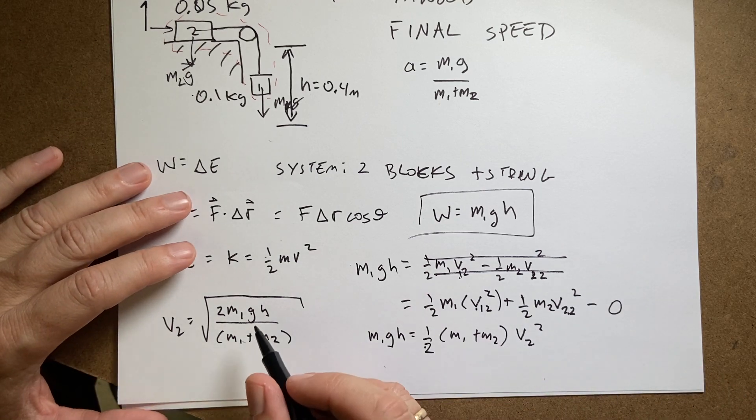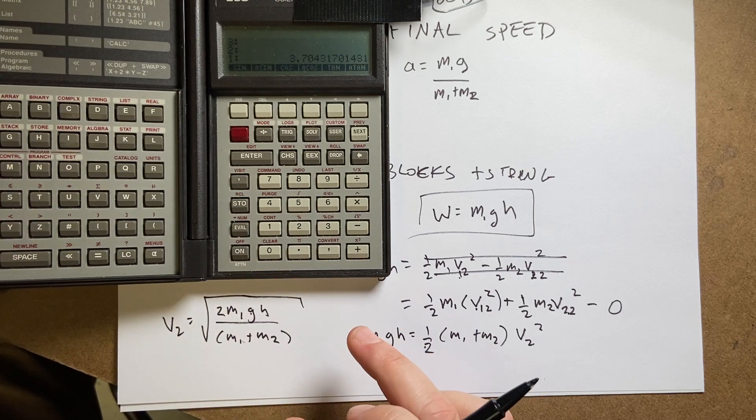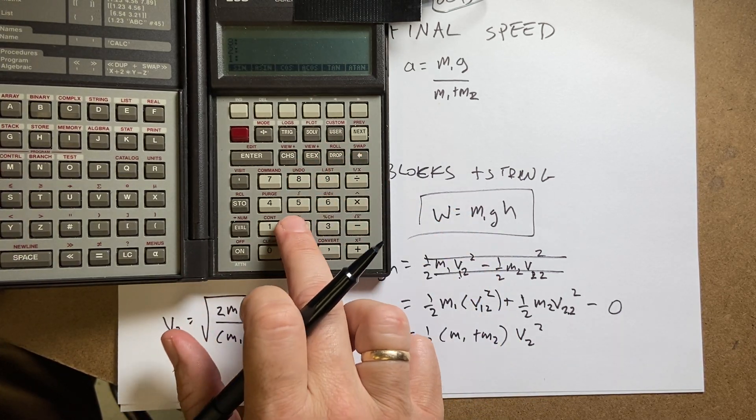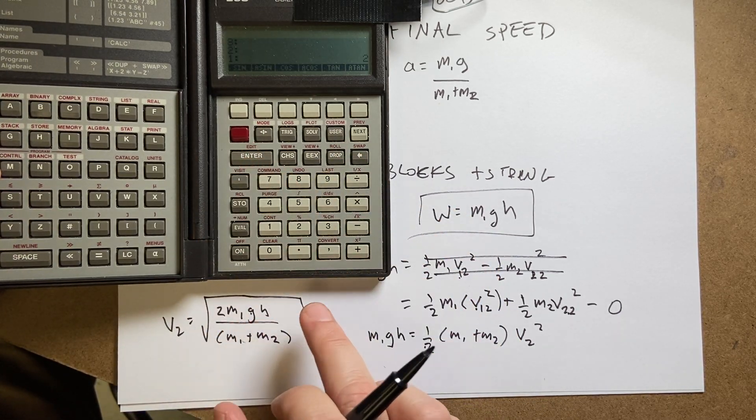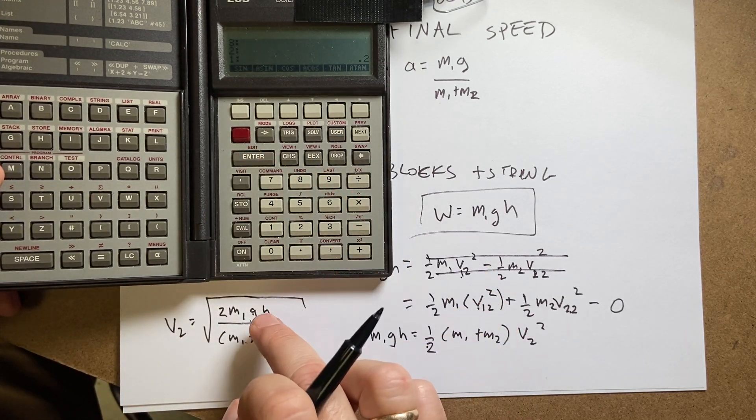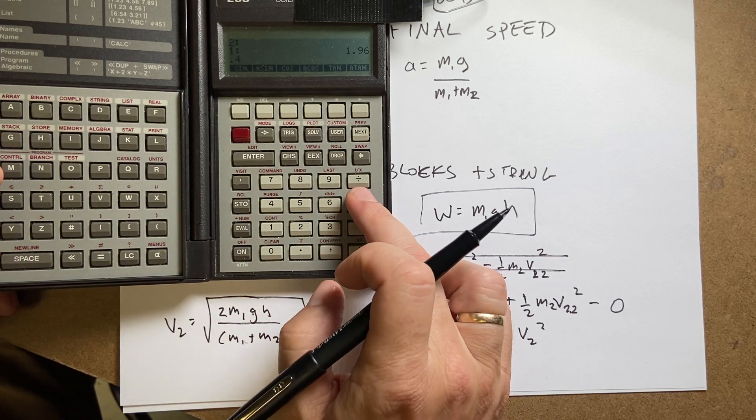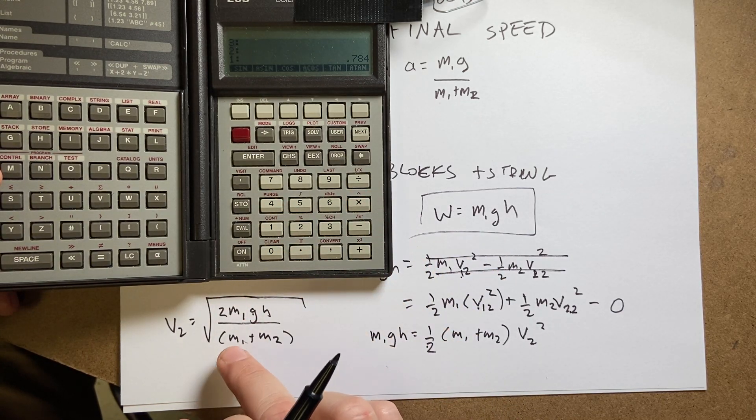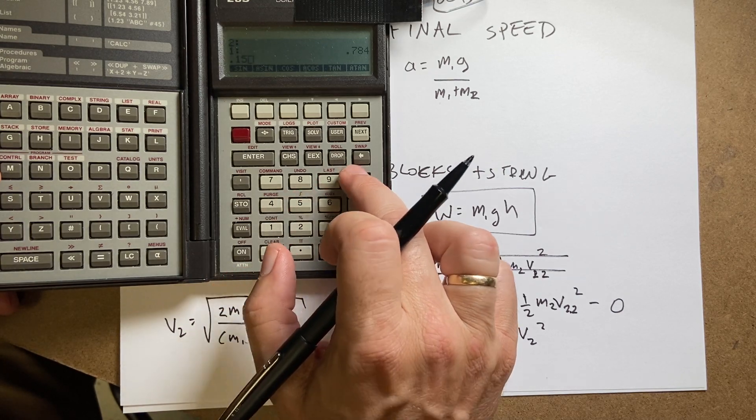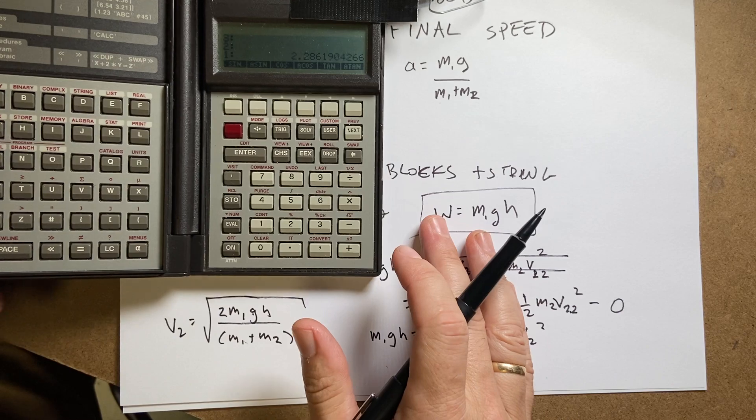Yeah, so let's just plug in my values here. I have everything I need to know, so I'm going to turn my calculator. I put in 2, mass 1 was 0.1 times g is 9.8 times h is 0.4. And then I divide by the sum of the mass, 0.15, and then I take the square root. And I get 2.28.